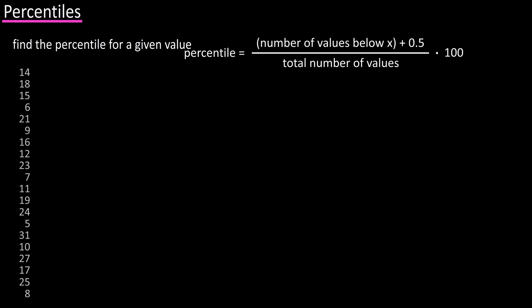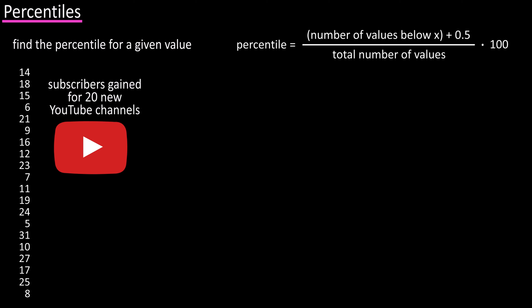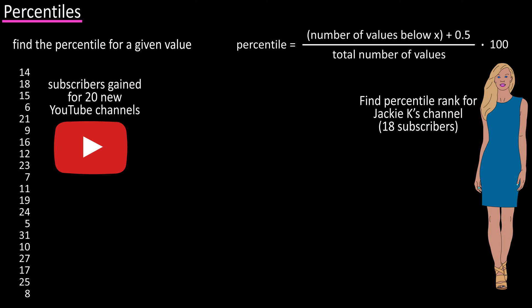Here is a data set for subscribers gained for a one-month period for 20 new YouTube channels. Let's say that we wanted to find the percentile rank for Jackie Kay's fashion channel, which is 18. The first thing we do is arrange the data in order of smallest to largest.